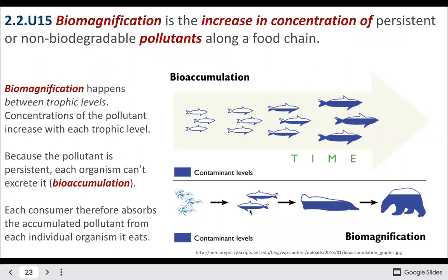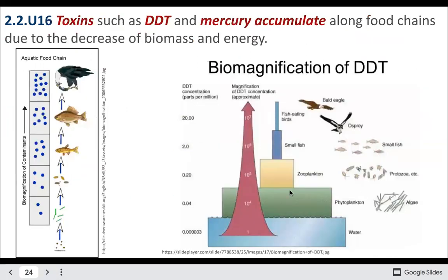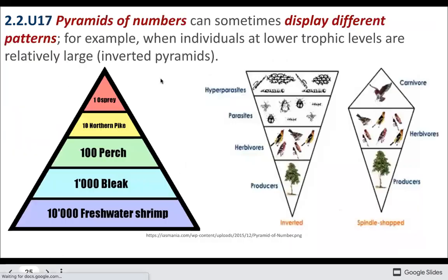Biomagnification occurs between trophic levels. Since each level must eat multiple individuals from the level below it, the concentration of the pollutant actually increases moving up. This is why DDT was so damaging to top predators — the concentration increased dramatically. This is kind of the opposite of a normal pyramid: pollutant concentration is magnified at the top because there are so few individuals at that level.